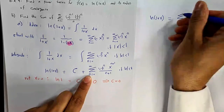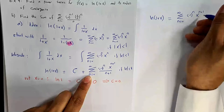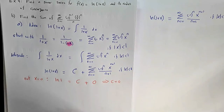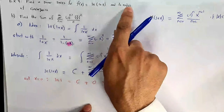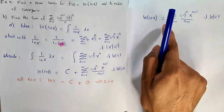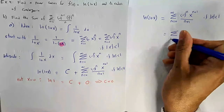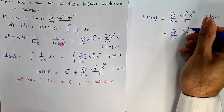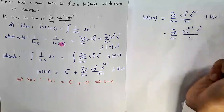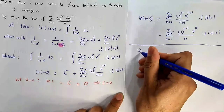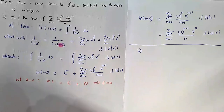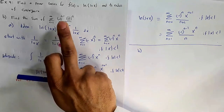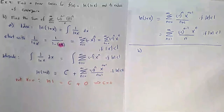This is an important result to memorize — it will appear in a table in section 11.10. The radius of convergence is 1. We can also rewrite by shifting the index: replace n by n-1, so the index starts from 1, giving Σ(n=1 to ∞) (-1)^(n-1) xⁿ/n for |x| < 1.